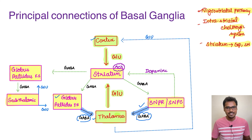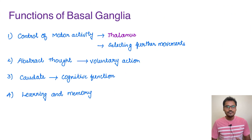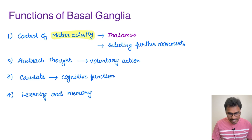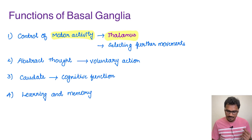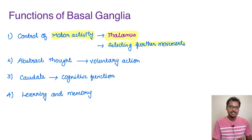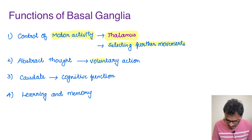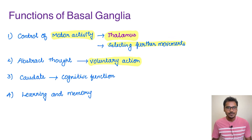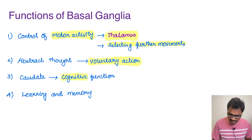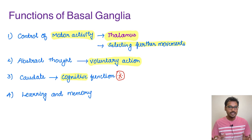If there is an imbalance, disease will occur — which we will discuss in separate videos. Coming to the functions of basal ganglia: it is involved in the control of motor activity, especially by controlling the thalamus. Basal ganglia, along with the cerebellum, helps in selecting further movements — what is going to happen in the next step. Any abstract thought is converted into a voluntary action. The caudate nucleus is also involved in cognitive functions, and the entire basal ganglia circuitry has been implicated in learning and memory processes.